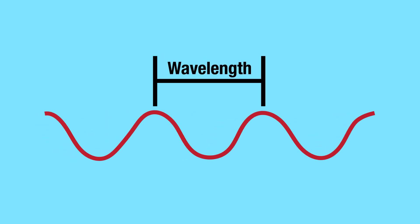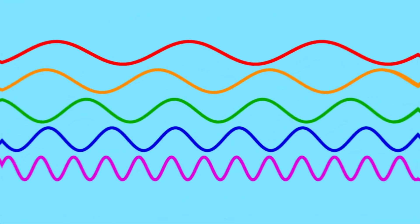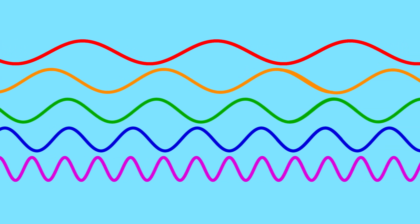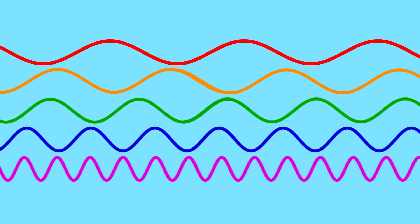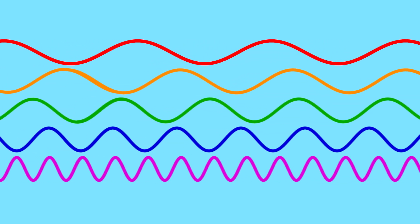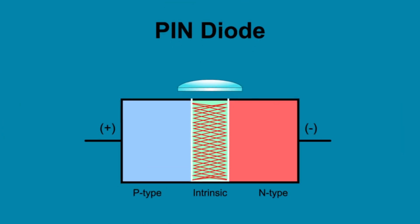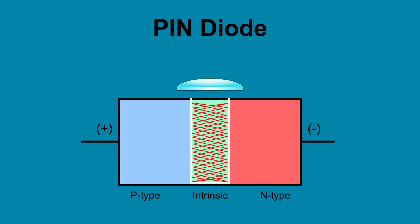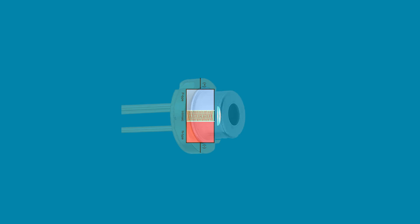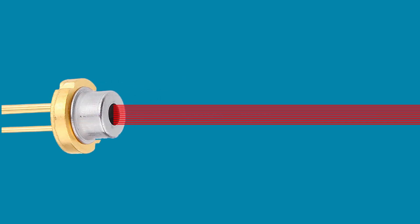So what makes lasers so special? Light travels in waves, with the wavelength measured from one peak to the next. Every color of light has a different wavelength. Reds have a longer wavelength, while blues and purples have shorter wavelengths. With laser light, the waves travel together with their peaks all lined up, or in phase. This coherence, combined with the ray collimation, are why laser beams are very narrow, very bright, and can be focused into a very tiny spot.